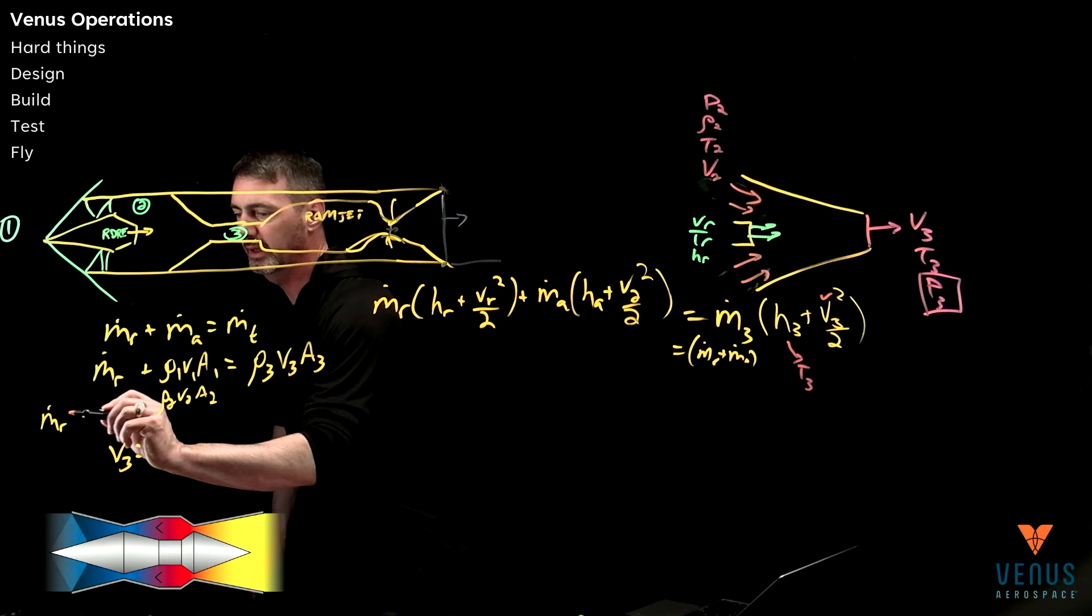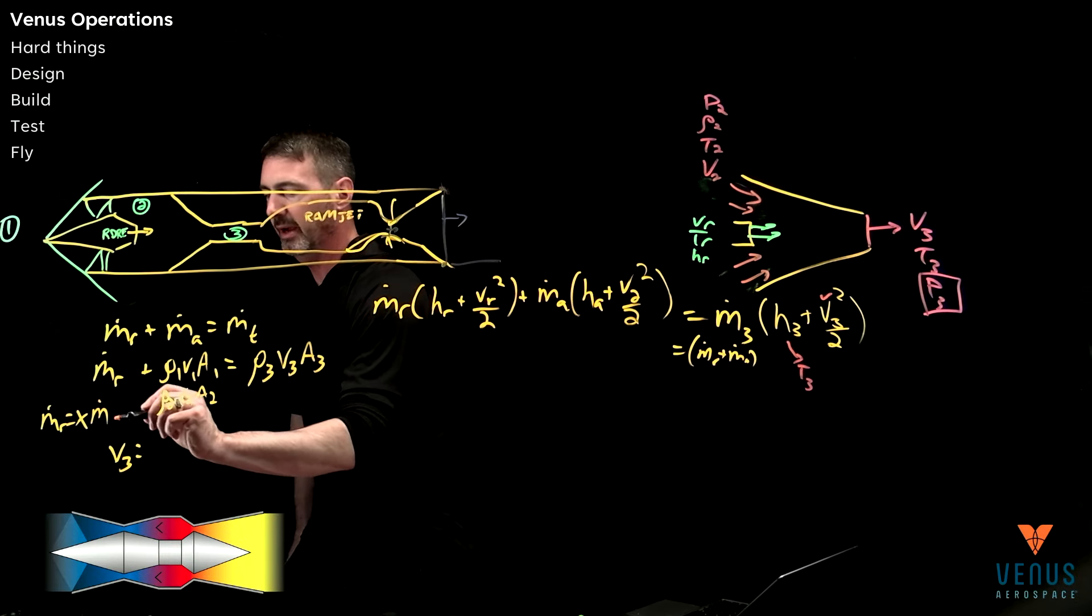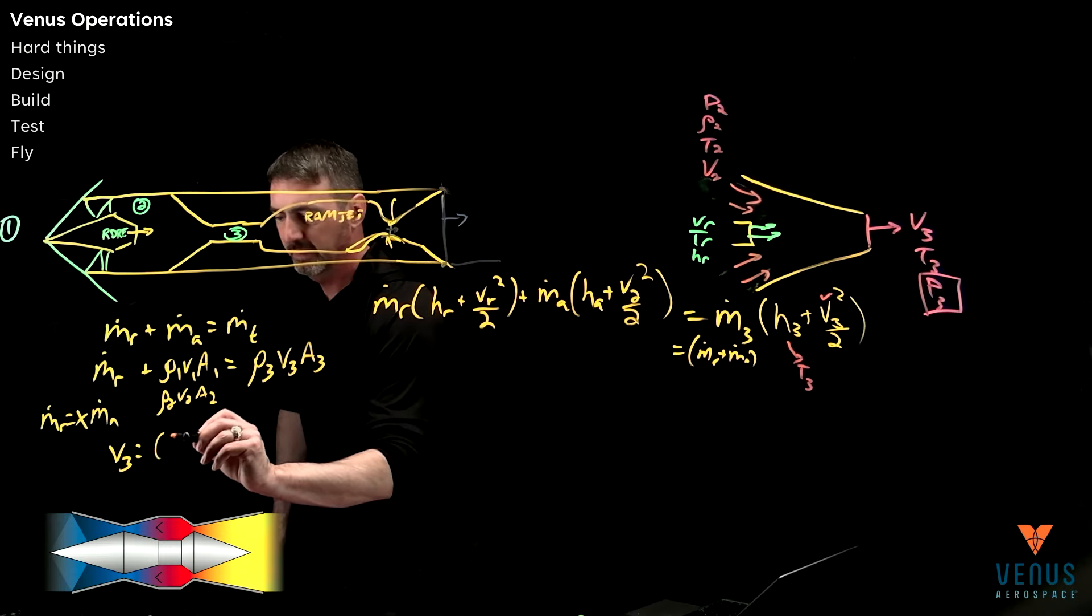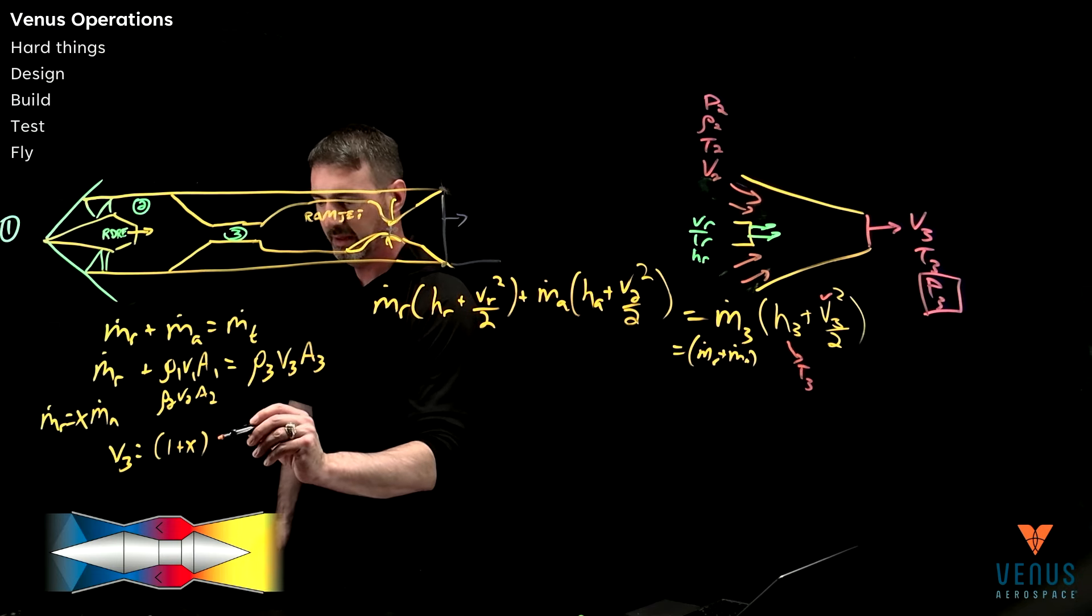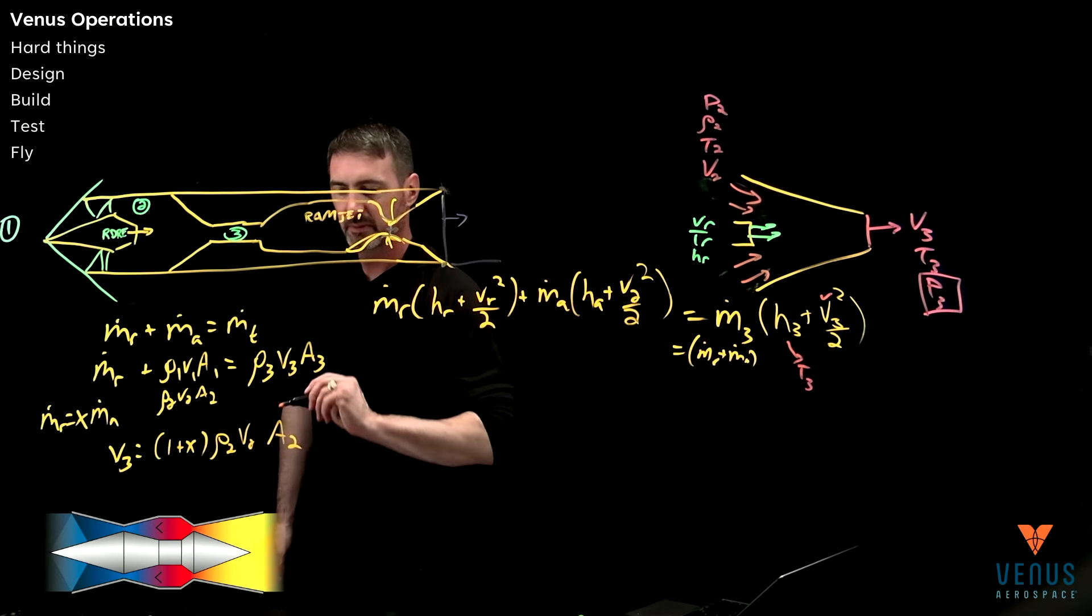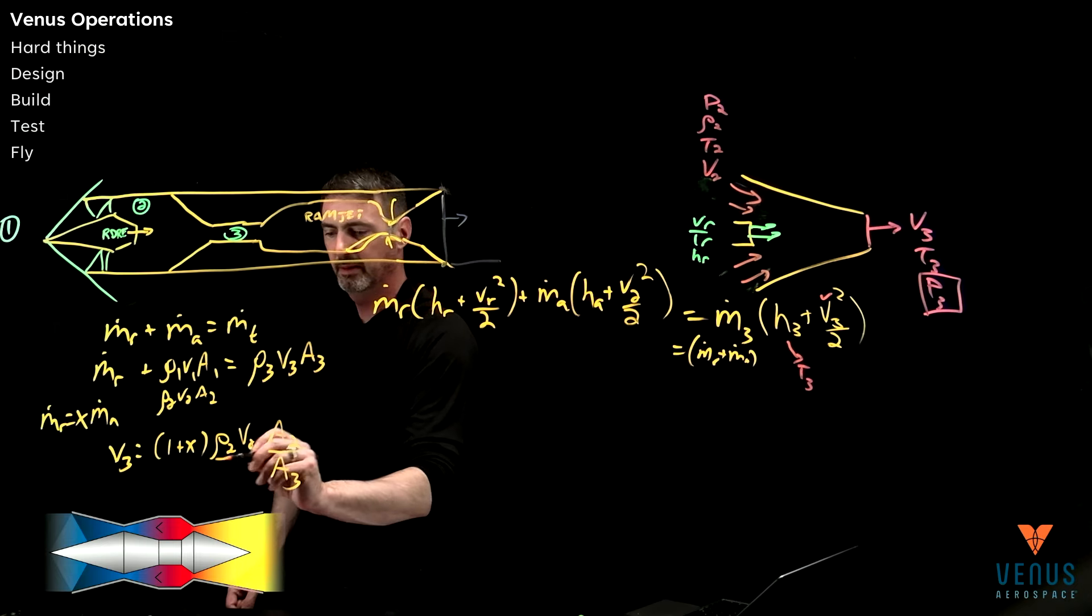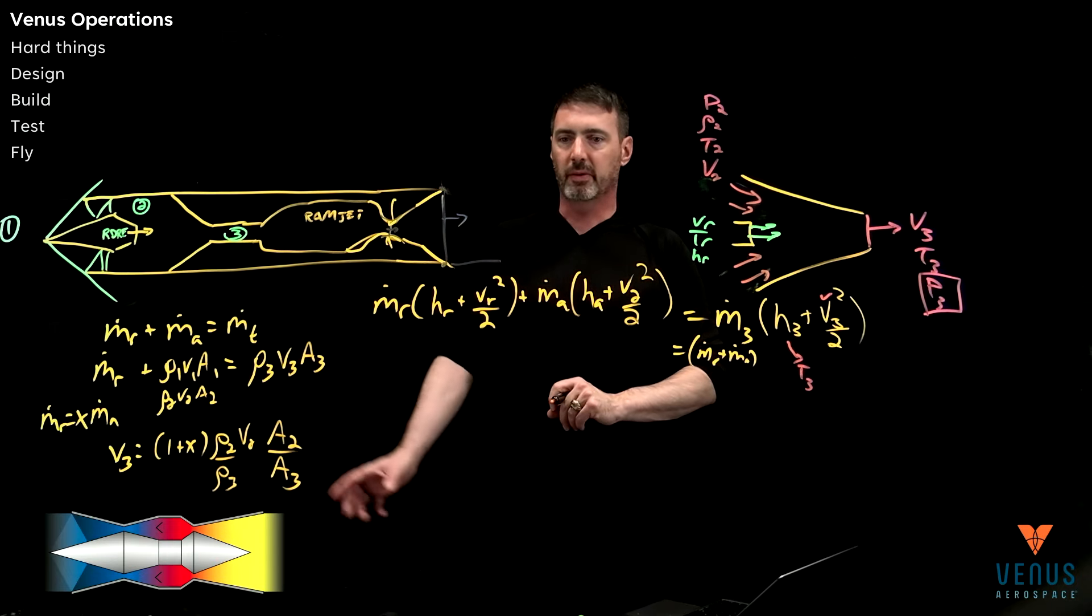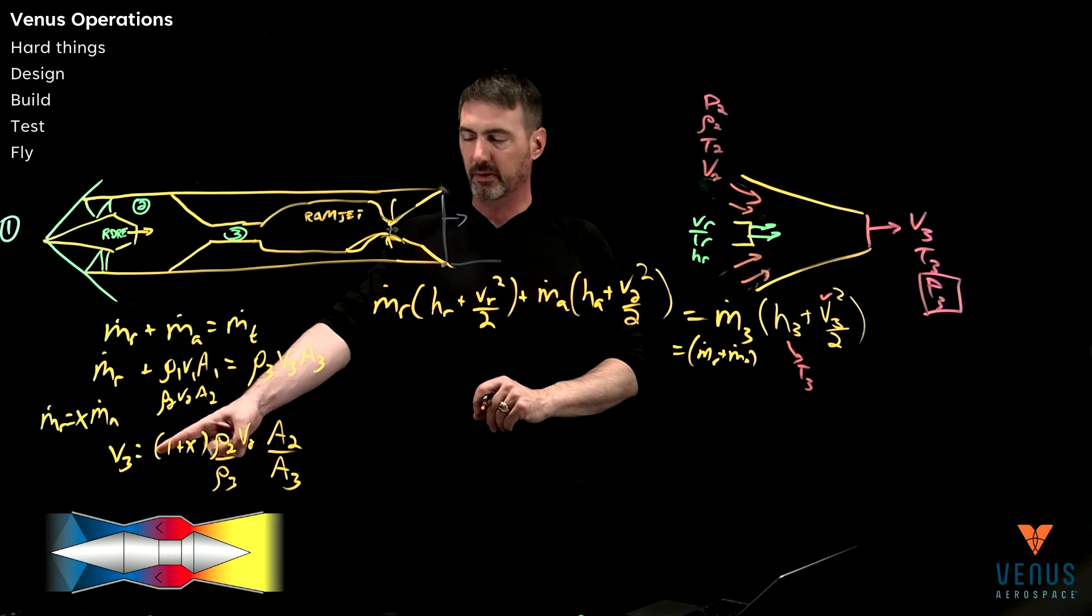I can come back over here and actually solve for V3. If I do one more thing and say that the mass of the rocket is just some fraction X of the mass of the air, then V3 is that fraction, and then I'm going to leave it in the form rho2 V2 A2 divided by A3 divided by rho3. So I have a way to solve for V3 if I know the density.